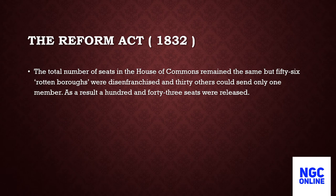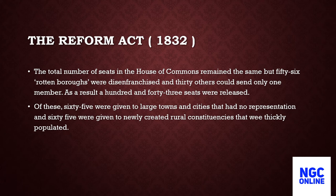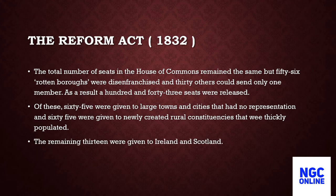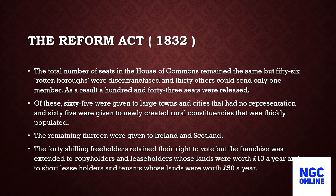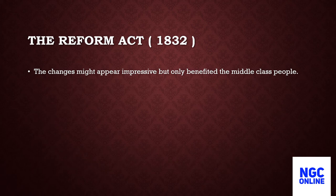The total number of seats in the House of Commons remained the same, but 56 rotten boroughs were disenfranchised and 30 others could send only one member. As a result, 143 seats were released. Of these, 65 were given to large towns and cities that had no representation, and 65 were given to newly created rural constituencies that were thickly populated. The remaining 13 were given to Ireland and Scotland. The 40-shilling freeholders retained their right to vote, but the franchise was extended to copyholders and leaseholders whose lands were worth £10 a year, and to short leaseholders and tenants whose lands were worth £50 a year. The changes might appear impressive, but only benefited the middle class people.